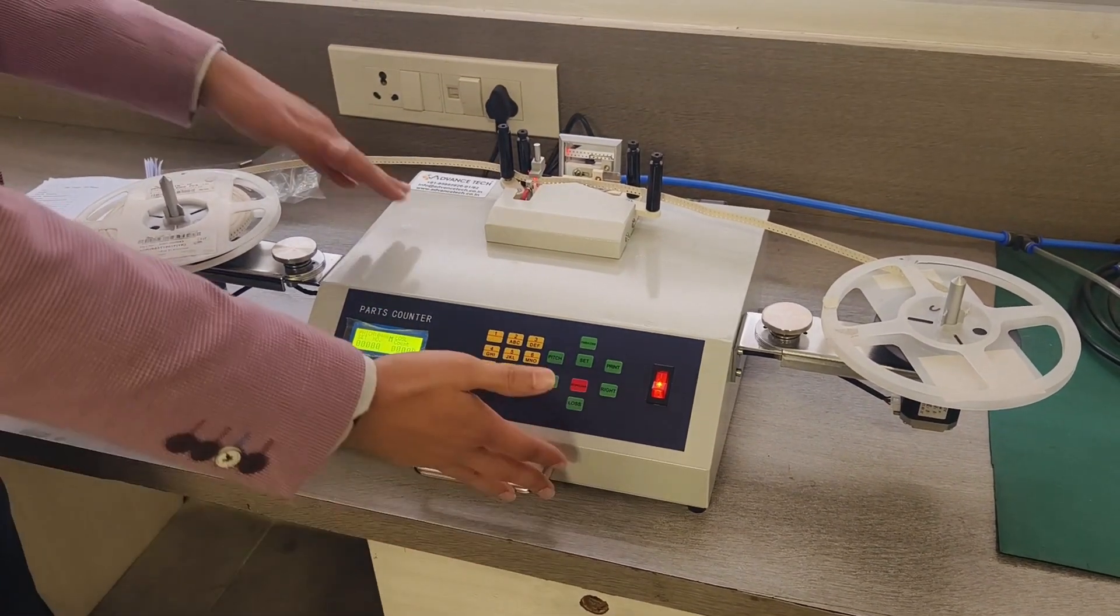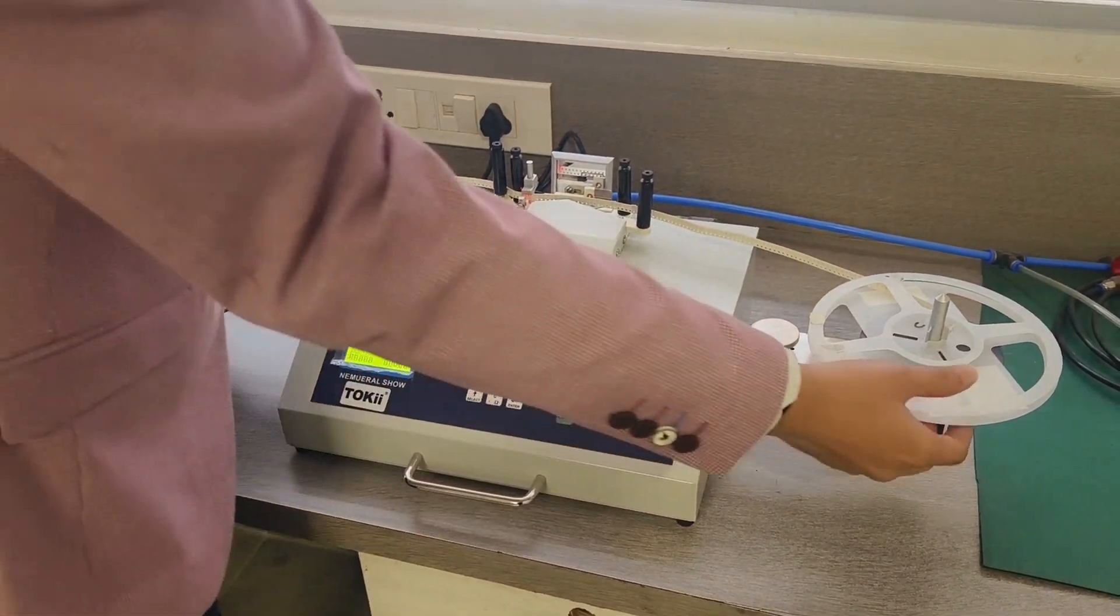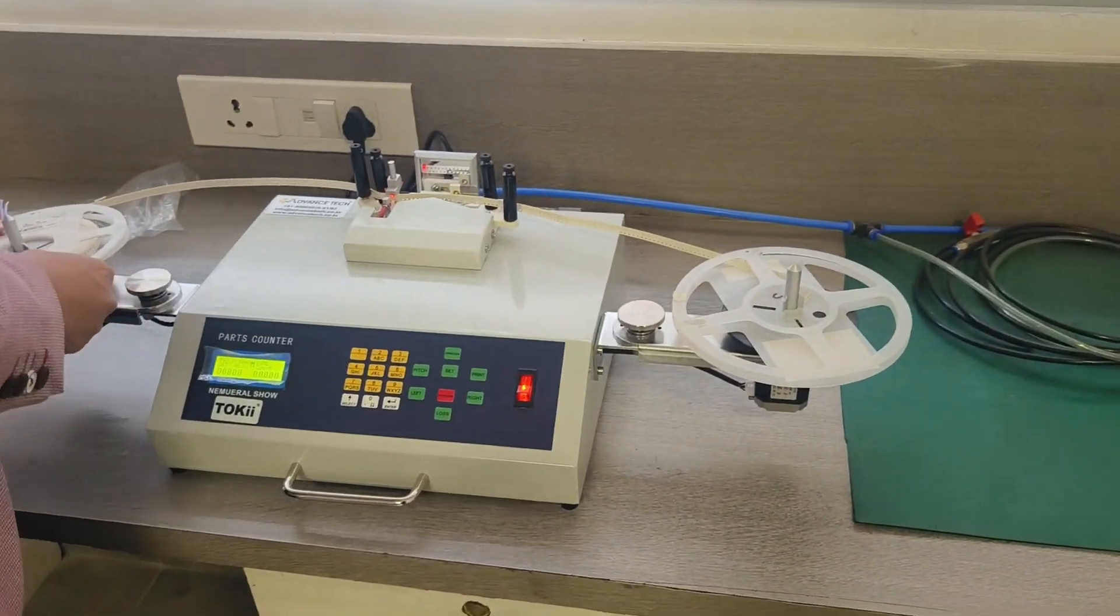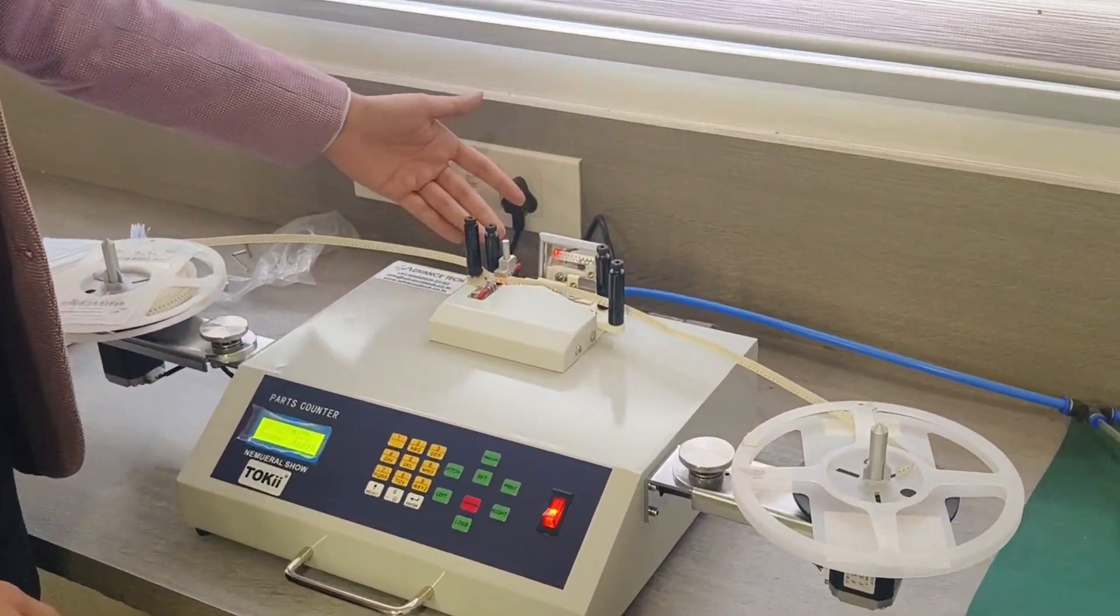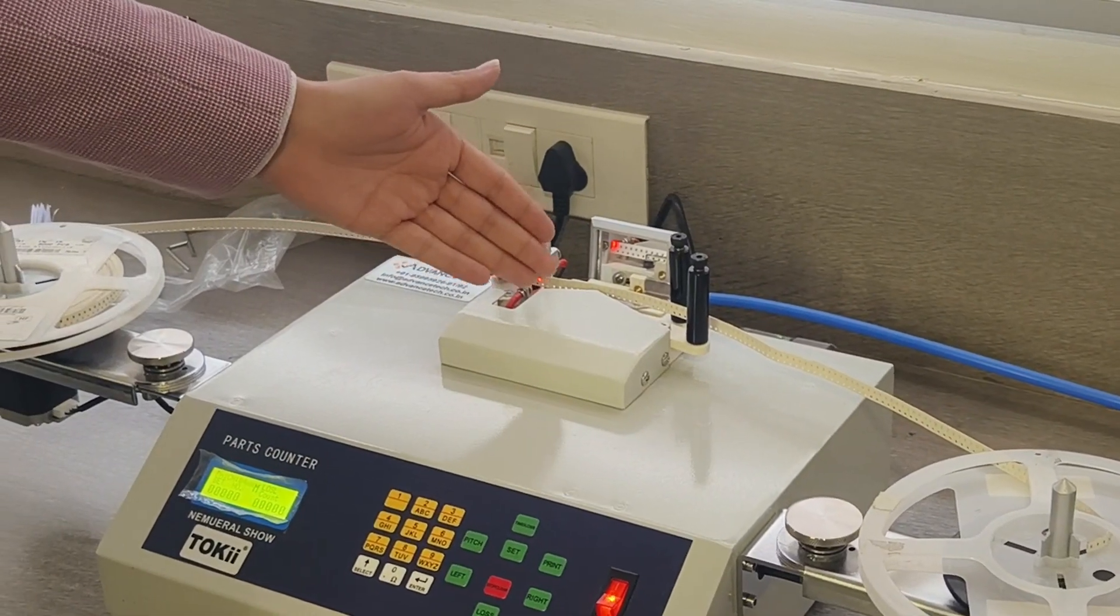So this is the machine as you can see. Here you put the reels, there is a mirror over here, and there is a sensor placement over here.